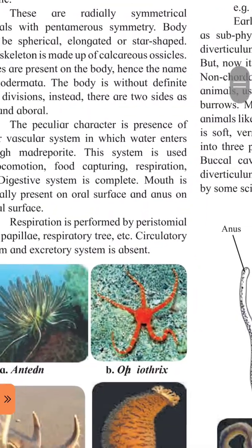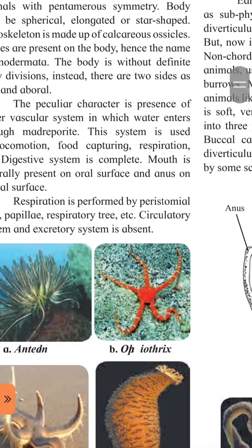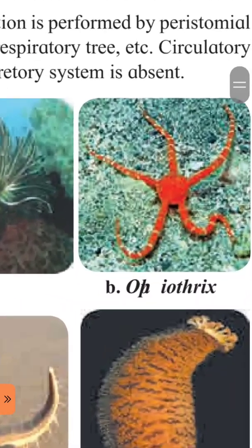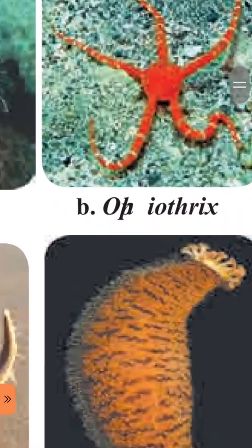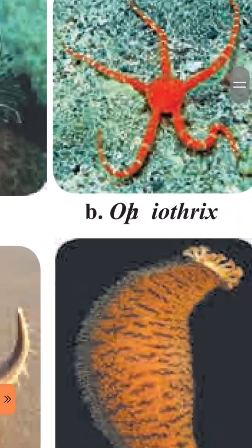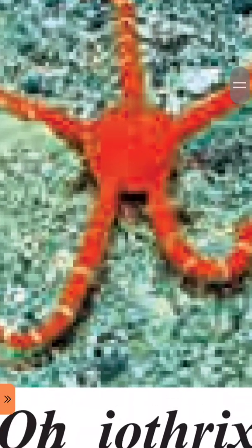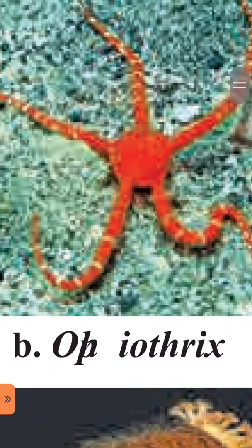So to summarize phylum Echinodermata: these organisms live in marine water, their body has spines — kaante hain. There are two surfaces: oral side and aboral side. The body is radially symmetrical with pentamerous symmetry — the body can be divided into five equal parts.